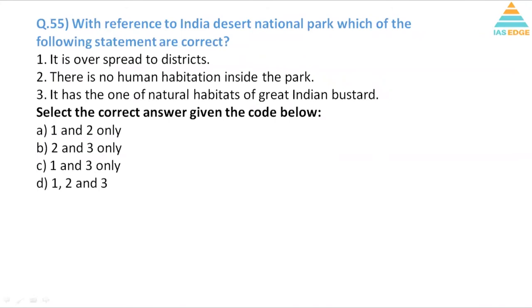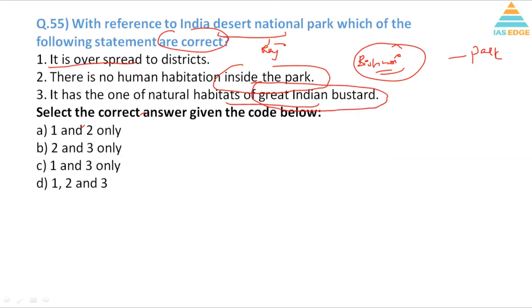With reference to India's Desert National Park, which is a national park in Rajasthan, which of the following statements are correct? It is spread over two districts - yes, there are two districts over which it is spread: Barmer and Jaisalmer, so it is correct. There is no human habitation in this park - no, there is a Bishnoi community, a very famous Bishnoi community which tries to protect nature and environment and they have park vegetation inside. So statement 2 is incorrect. It has one of the natural habitats of the great Indian bustard - yes, great Indian bustard is a bird which is found in the state. So one and three are correct, so C is the right answer.